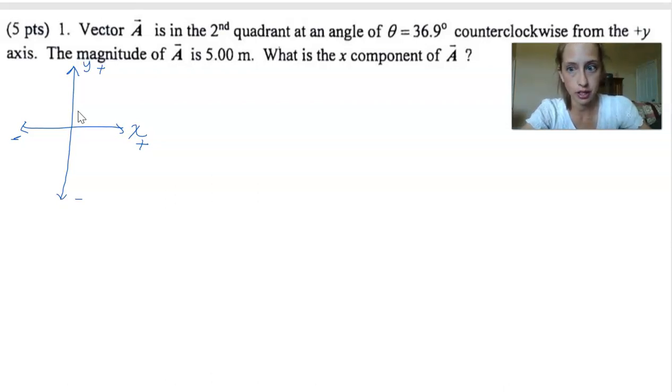We are counterclockwise from the positive y-axis. So if we have a clock, clockwise goes that way. So counterclockwise goes the other way. Fun fact, other countries call it anti-clockwise. So we're going anti-clockwise from the positive y-axis. So we start here and we go counterclockwise that many degrees. If it's more than 90 degrees, we stop and we're over here somewhere. But it's between 0 and 90, which means it's like there.